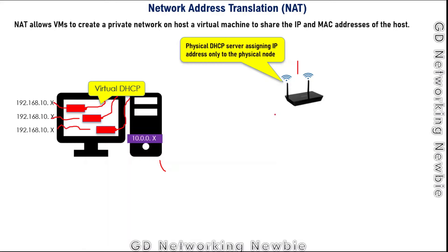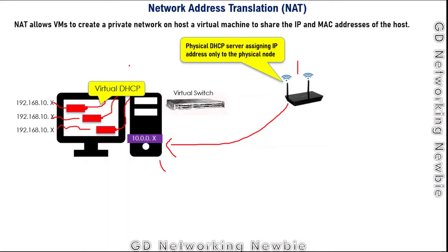So the host gets an IP address — for example, 10.0.0.25 — from that router. Now in the NAT option, all these virtual machines using their virtual network adapters will be connected with a virtual switch. That virtual switch is provided by the virtualization software. By default we have VMnet8, which is configured with the NAT option.